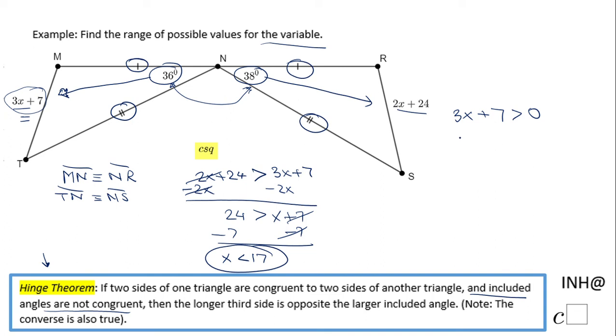And I'm going to solve it. I'm going to subtract 7 on both sides. And I have 3x greater than negative 7, divided by 3. And we notice x has to be greater than negative 7 thirds.